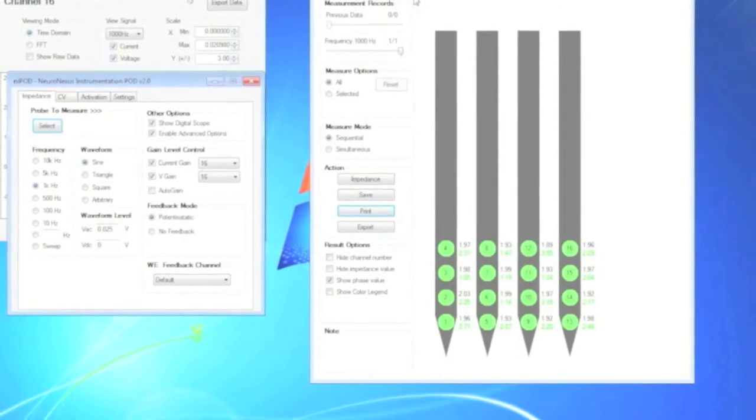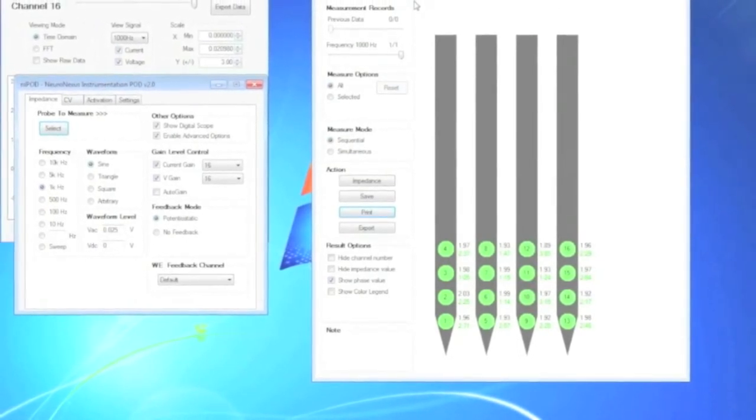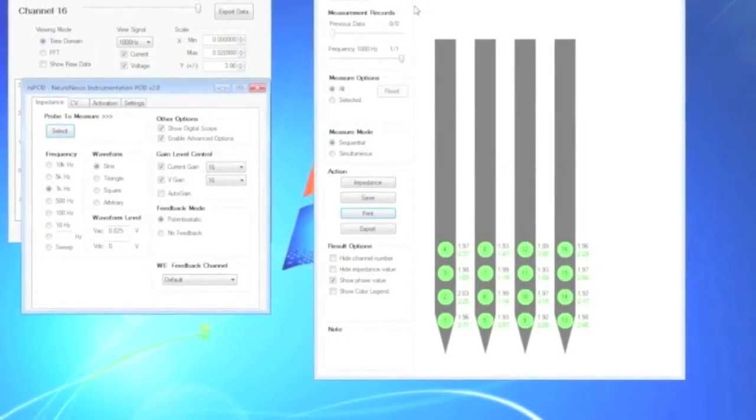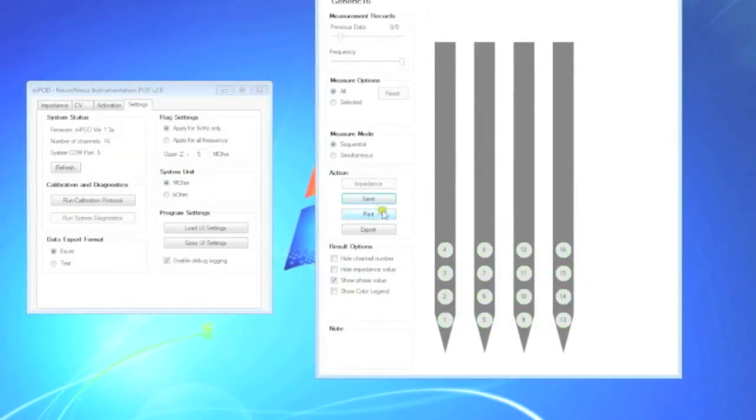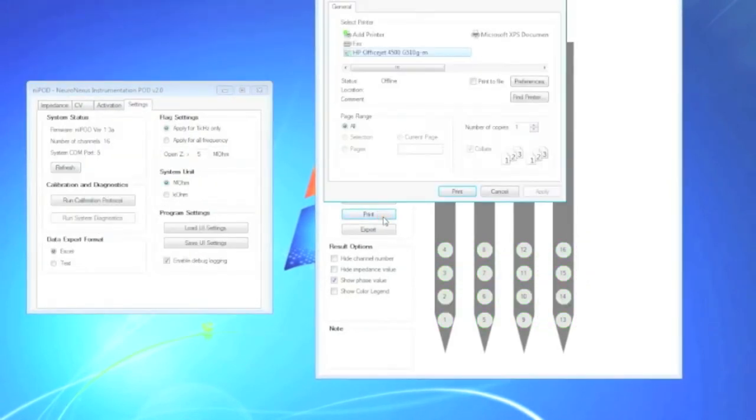Results will be displayed in the probe visualization interface. The color of the sites give a quick visual clue of the impedance level. You can print the data to paper like this.